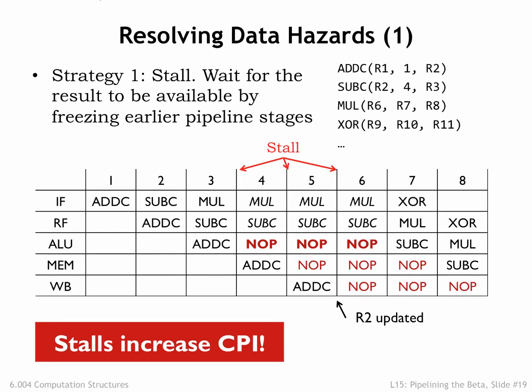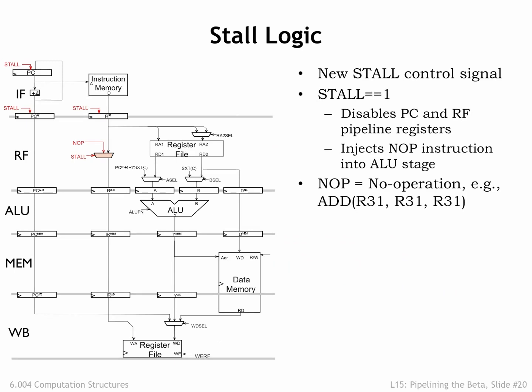Stalling will ensure correct pipelined execution, but it does increase the effective CPI, leading to longer execution times if the increase in CPI is larger than the decrease in cycle time afforded by pipelining. To implement stalling, we only need to make two simple changes to our pipelined data path. We generate a new control signal, STALL, which when asserted disables the loading of the pipeline registers at the input of the IF and RF stages, meaning they'll have the same value next cycle. We also introduce a MUX to choose the instruction sent to the ALU stage — if STALL is 1, we choose a NOOP; if STALL is 0, the RF stage passes its current instruction to the ALU.